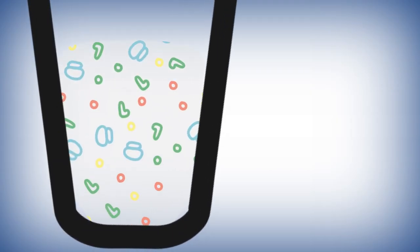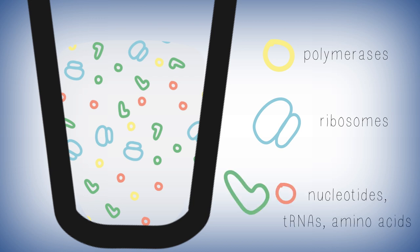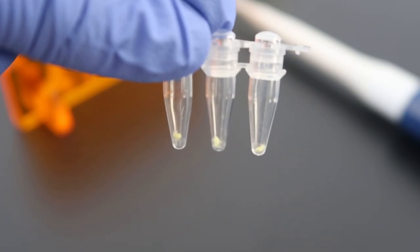Now, BioBits has packaged all of the power of living cells into a tube. Each tube contains all of the polymerases, ribosomes, and other cellular components that you need to make proteins, stored as a freeze-dried pellet.